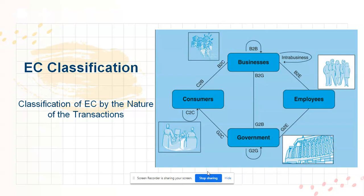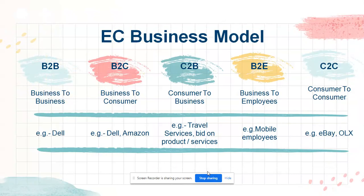Government interacts with other governments, with consumers or citizens, with business organizations, and with government employees. Depending on the nature of the transaction conducted by these entities, we get the e-commerce classification, which we call e-commerce business models.